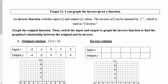Target 11: I can graph the inverse given a function. The inverse function switches input and output values — it just switches the x's and the y's. The inverse of f can be denoted by f to the negative one power, which is read as f inverse. We're going to graph the original function, then switch the input and output values to graph the inverse.